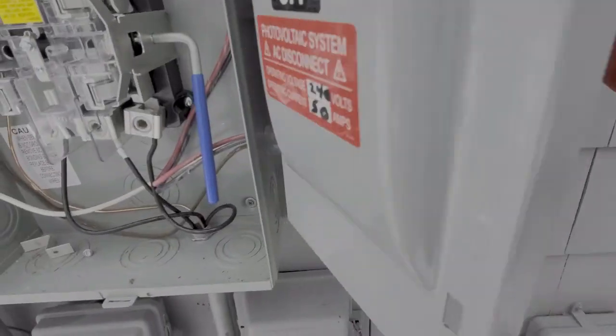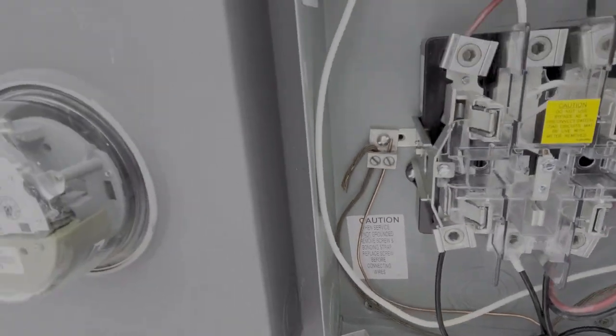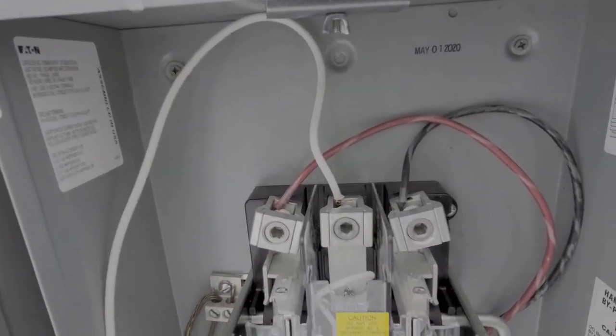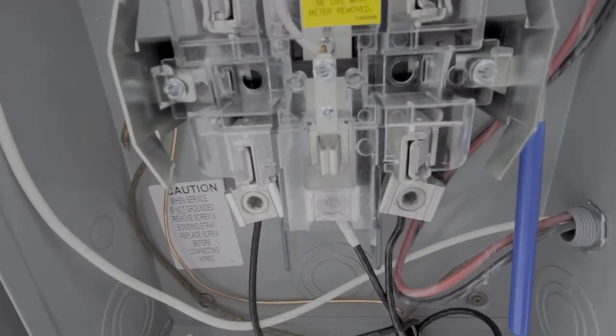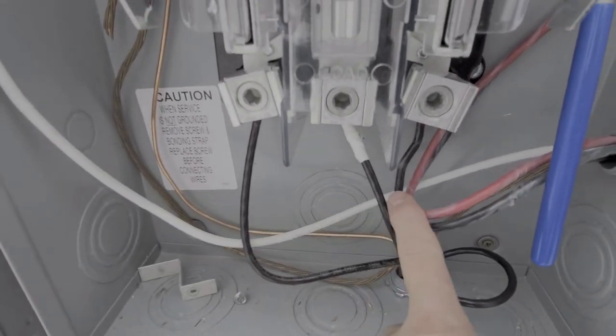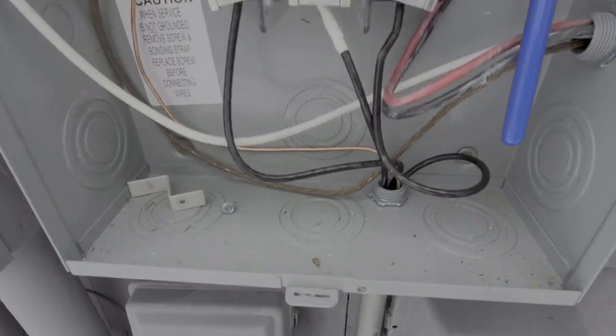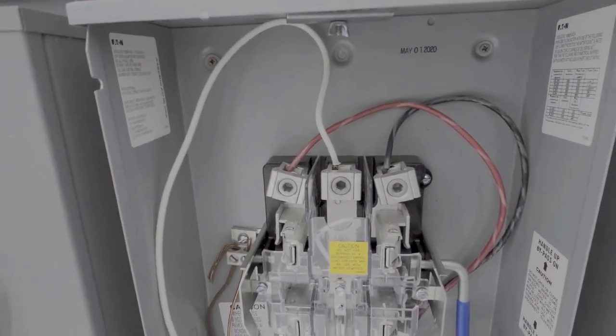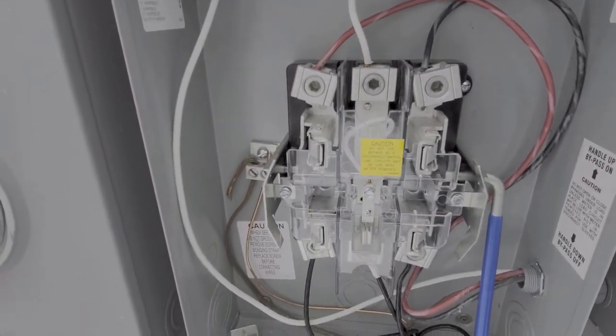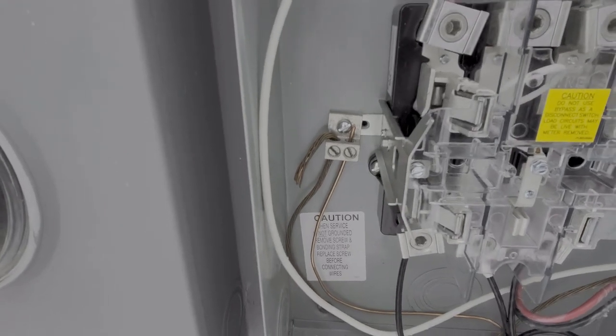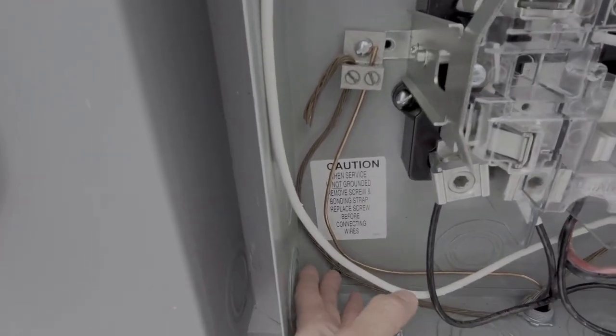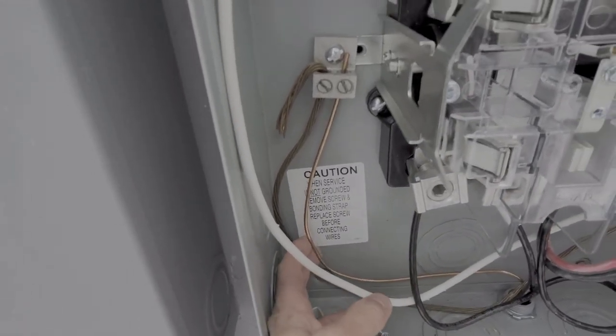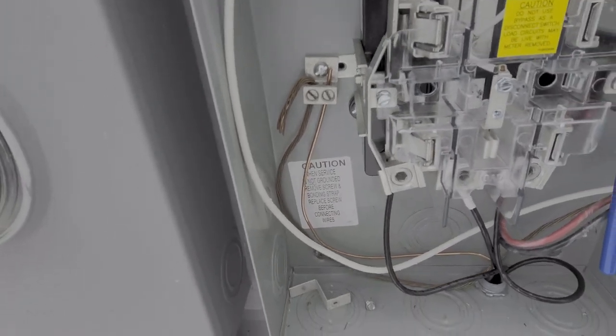Then from the disconnect we run over to the production meter. We go into the top of this production meter, comes out the bottom, and then these three all run into the house. Be sure to torque all your connections in here to the proper torque. One last note, we can see the ground comes in from the disconnect and the ground goes out to the house. Well let's go to the basement and see what we have down there.